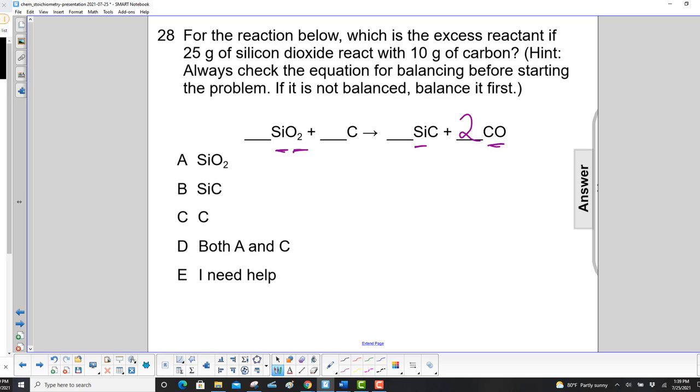So let's look at carbon. We have one on the left, and one, two, three on the right. So let's put a three here. So three carbons on the left, three on the right, two oxygens on both sides, and one silicon on both sides. We're good. So we now have a balanced equation.